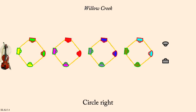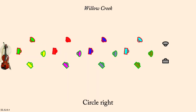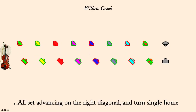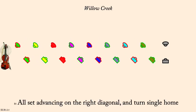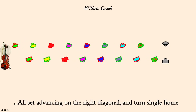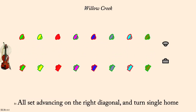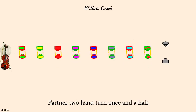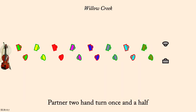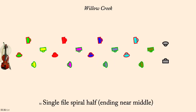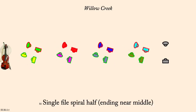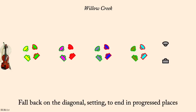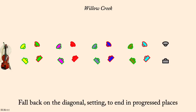Set advancing on right-diagonal and turn single back. Partner two-hand turn once and a half. Single file spiral clockwise half. Fallback setting. Left hands across.